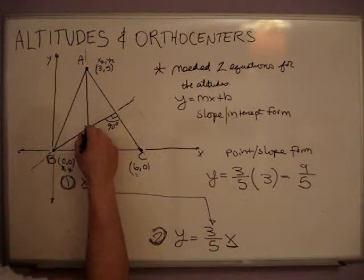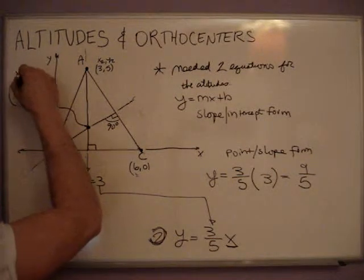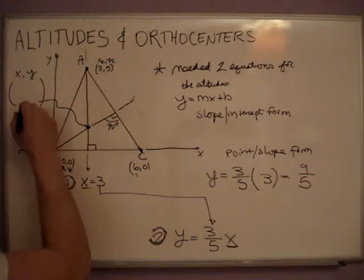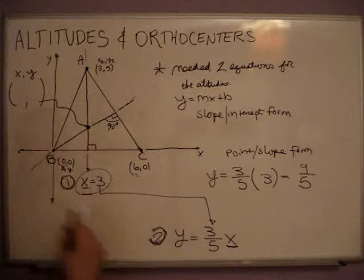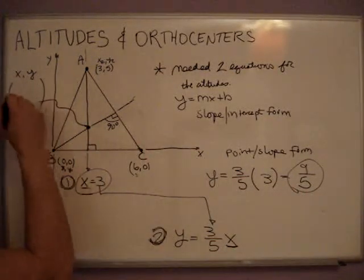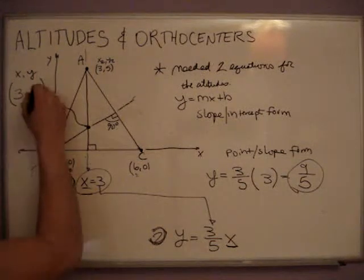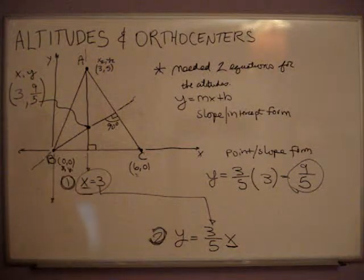So our orthocenter that we were looking for, just put this up here so we can label it. Here's our x value. We'll plug that in for the x. And our y value is what we just found here. So our final answer is 3, 9-fifths, and that's exactly where those two points meet. And that's how you use altitudes and orthocenters in geometry.